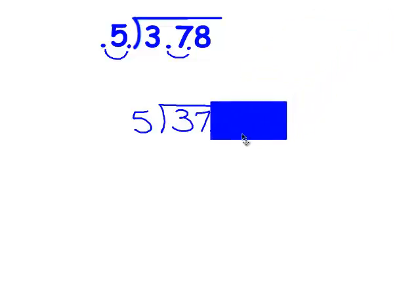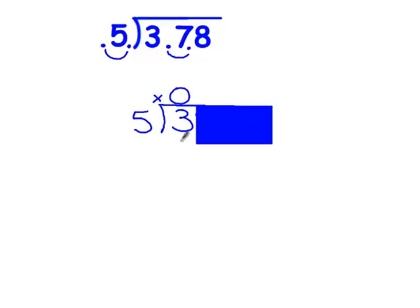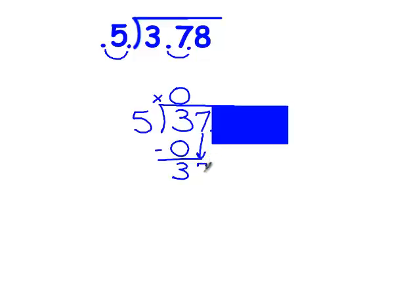I'm going to cover up everything but the numbers that I'm working with. I can't get any groups of 5 out of 3, so I put a 0. 0 times 5 is 0. I have 3 left over. I'm going to move this cover over 1, and down comes my 7. I can get 7 groups of 5 out of 37. 7 times 5 is 35. I have 2 left over.